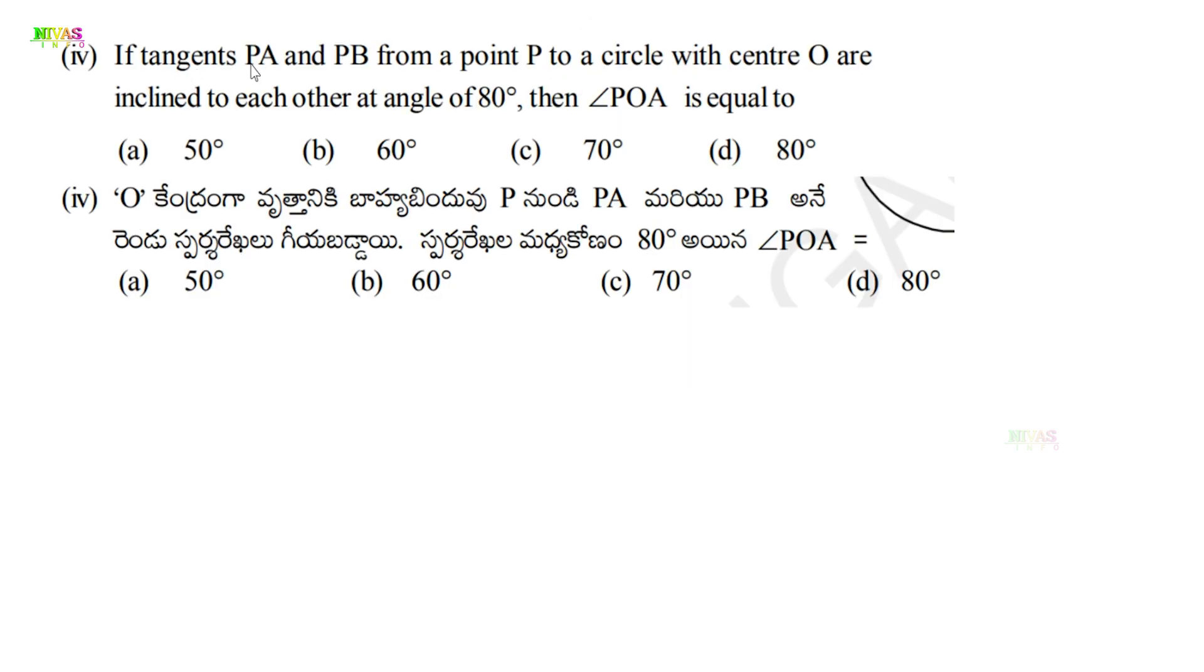Now let's begin the topic. Question: If tangents PA and PB from a point P to a circle with center O are inclined to each other at angle 80 degrees, then angle POA is equal to what? First, let's draw the diagram.